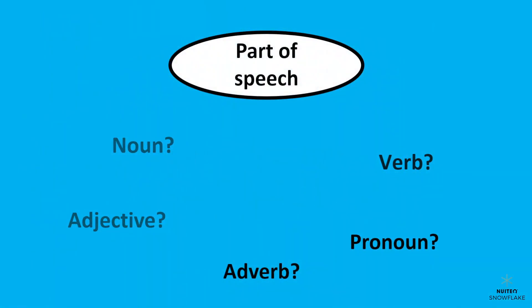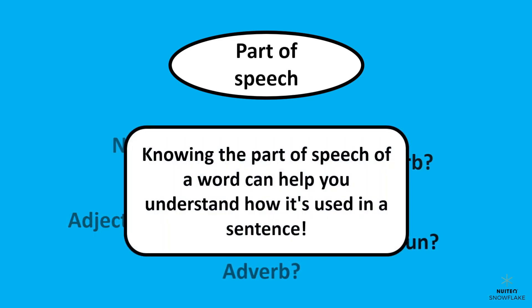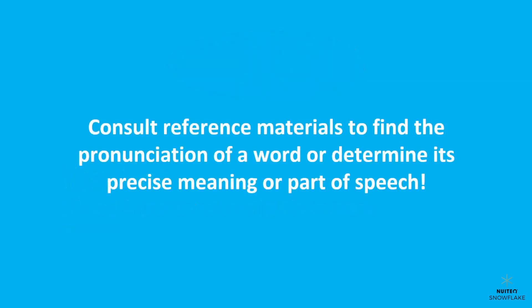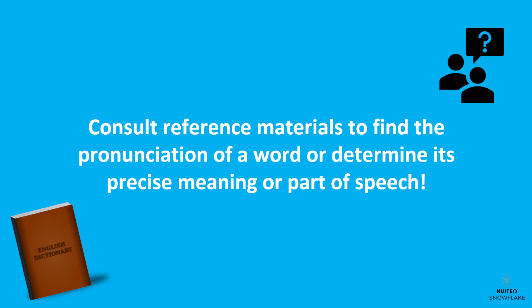Finally, let's talk about determining the part of speech of a word. Every word in the English language belongs to a certain part of speech, like nouns, verbs, adjectives, and adverbs. Knowing the part of speech of a word can help you understand how it's used in a sentence. If you look up a word in a dictionary, you'll usually see its part of speech listed next to it. For example, teacher is a noun, which means it describes a person, thing, animal, place, or idea. Now you know how to consult reference materials to find pronunciation, precise meaning, or part of speech — when in doubt, look it up.